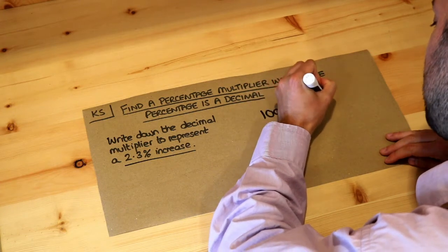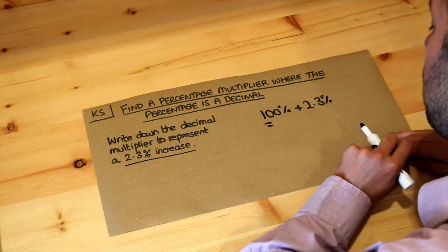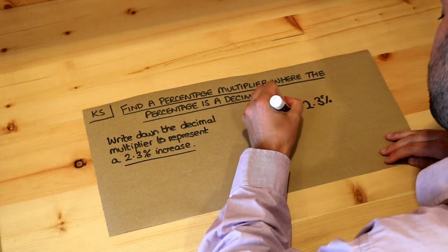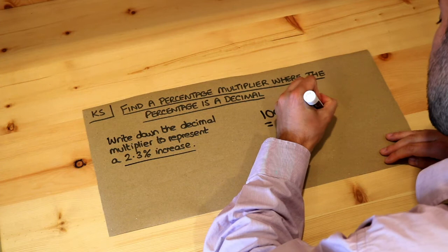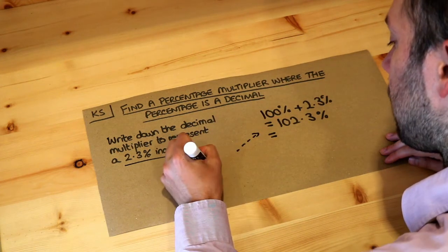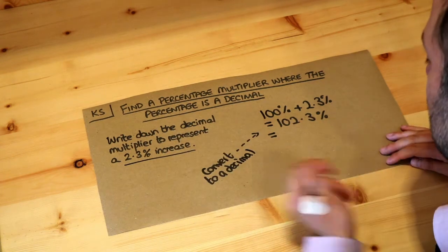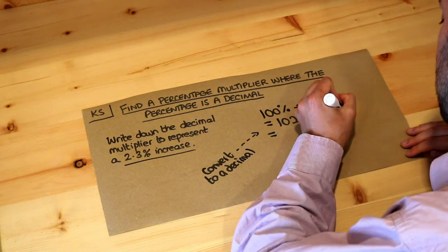Well, 100 plus 2.3 is 102.3%. Then we convert this percentage to a decimal, and to convert a percentage to a decimal you just divide by 100.